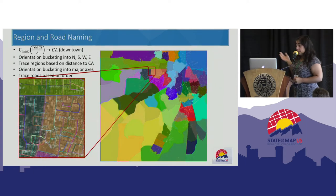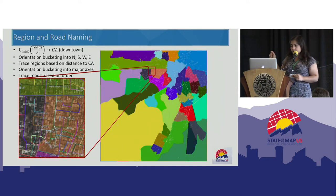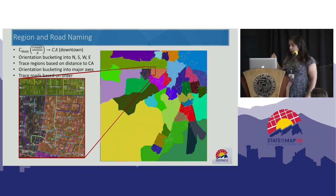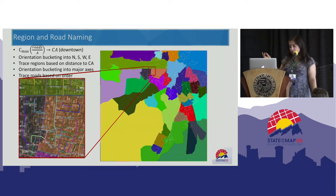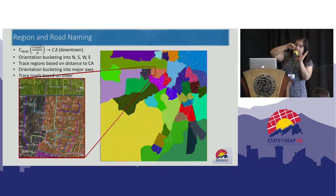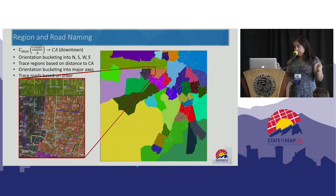After we have the regions, we mark the densest area as downtown and bucket other regions based on their orientation to get the London Postal Code scheme — south, north, east, west. After regions are named, we find the two major axes of the roads. If roads mostly follow a grid alignment, we say these are the two major axes, and we bucket all roads based on that to decide their odd parity in naming.